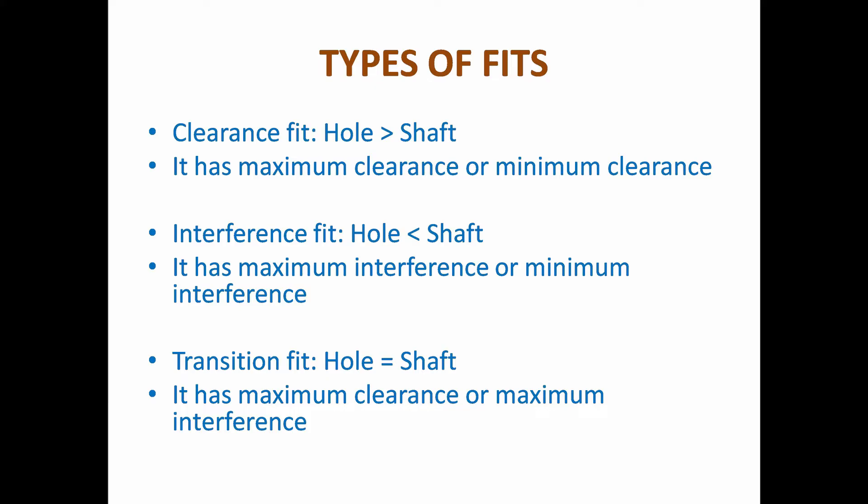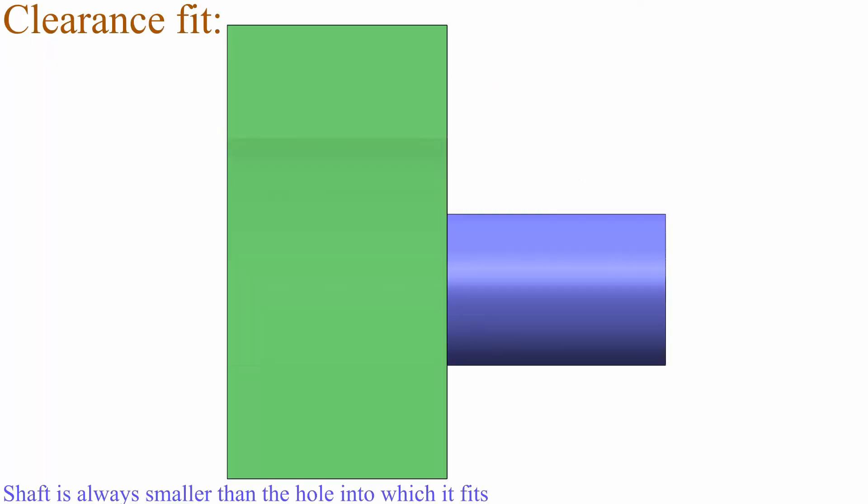There are three types of fits. Clearance fit: the hole is bigger than the shaft; it has maximum clearance or minimum clearance. Interference fit: the hole is lesser than the shaft; it has maximum interference or minimum interference. Transition fit: the hole is equal to the shaft; it has maximum clearance or maximum interference.